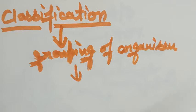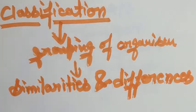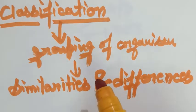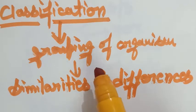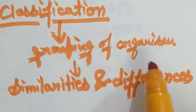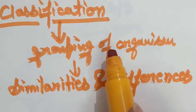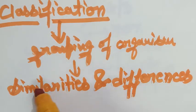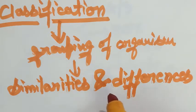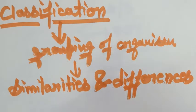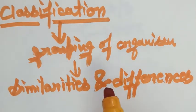So basically students, classification of organisms is nothing but arranging the organisms into groups or sets on the basis of similarities and differences which show their relationships.